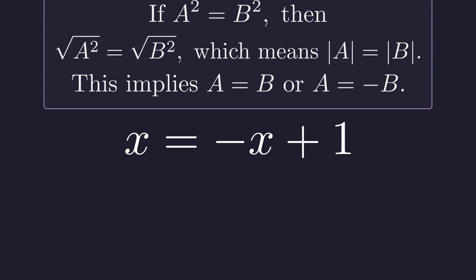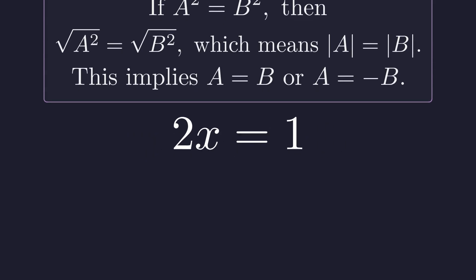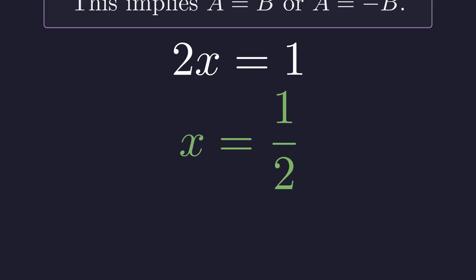Distribute that negative sign, and we get x equals negative x plus one. Add x to both sides, and we have two x equals one. Divide by two, and there's our answer. x equals one half.